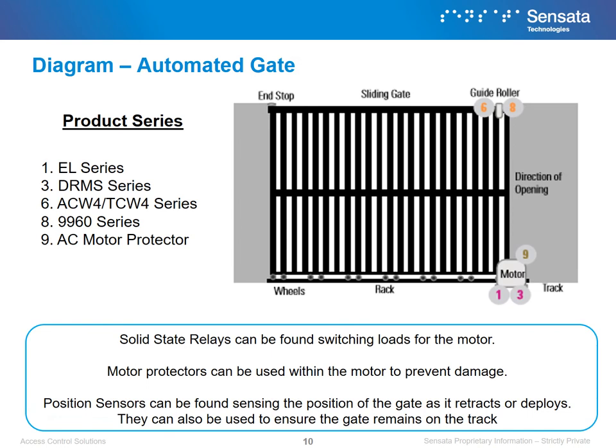Pictured here is where you can find our various solutions in an automated gate system. Our solid state relays can be found switching loads for the motor that powers the gate. The DRMS series can be particularly useful in gate systems that are operated frequently to maximize motor lifetime. Position sensors can be found sensing the position of the gate as it retracts or deploys, ensuring that jamming doesn't occur, and can additionally be found ensuring that the gate remains on track. A three-phase motor protector can be found in the motor to protect it against various failures seen by automated gate systems.